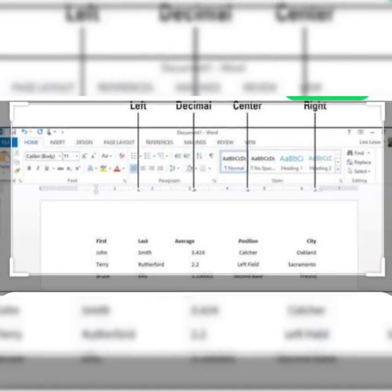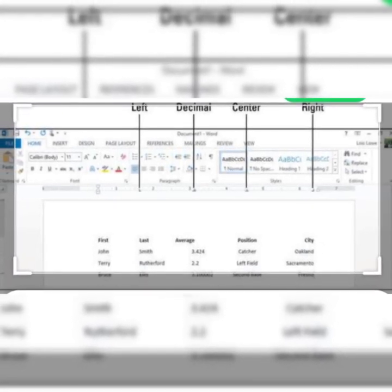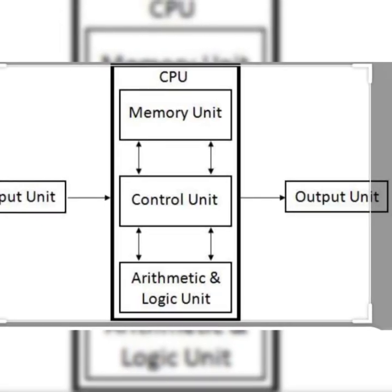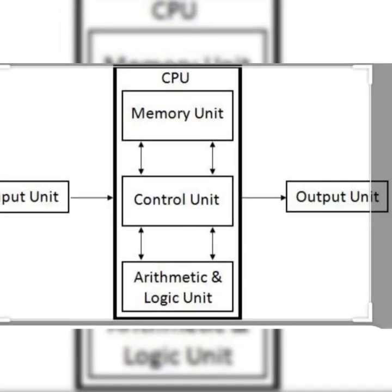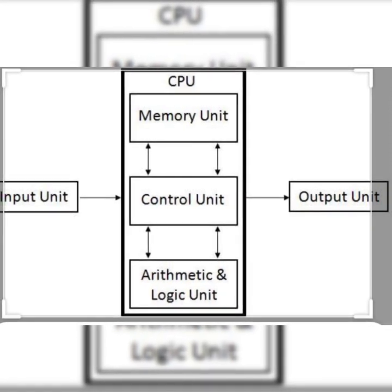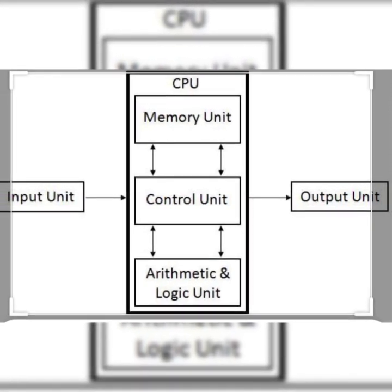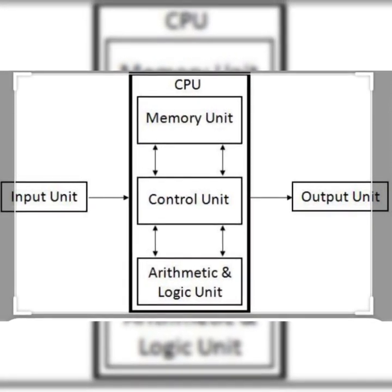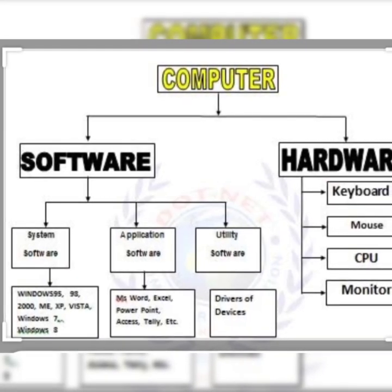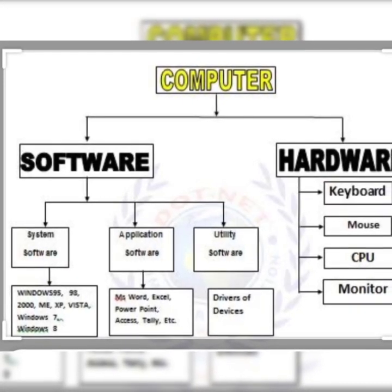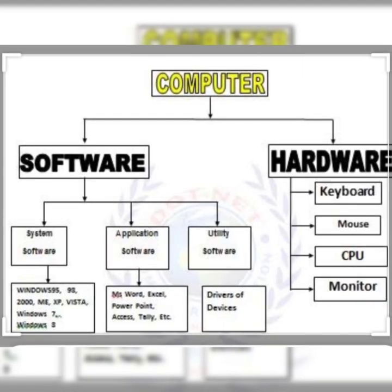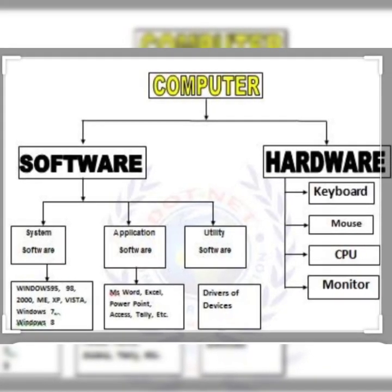Now we have style categories. LibreOffice Writer provides six style categories. For example, the first is the page style category, which means we can give a formatting style to a page.